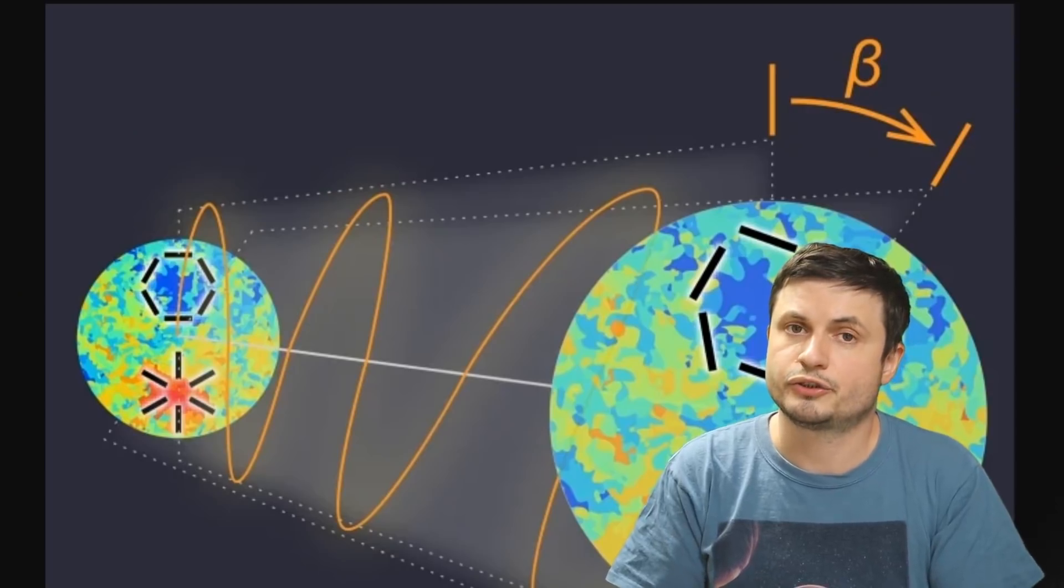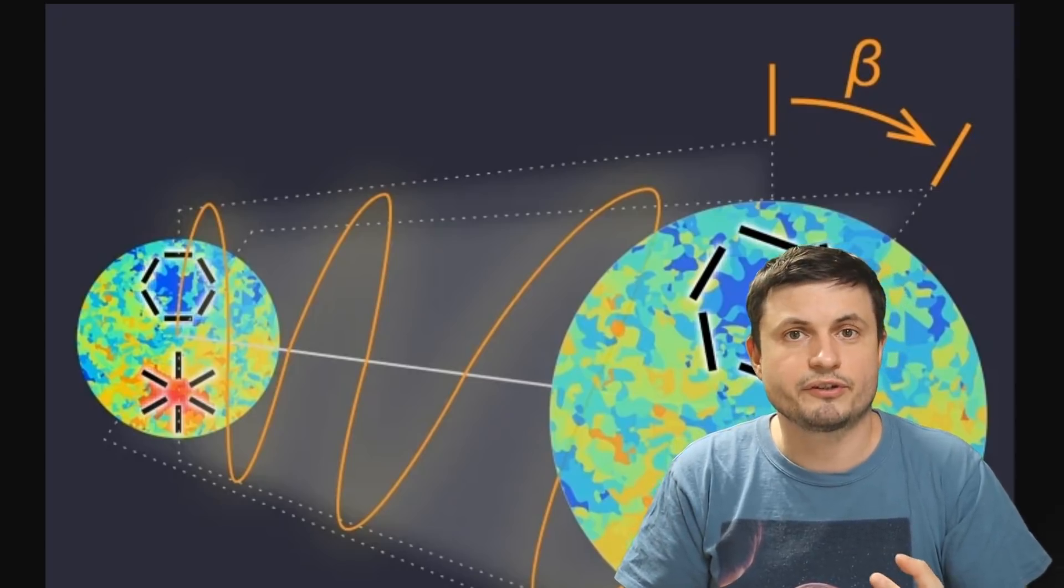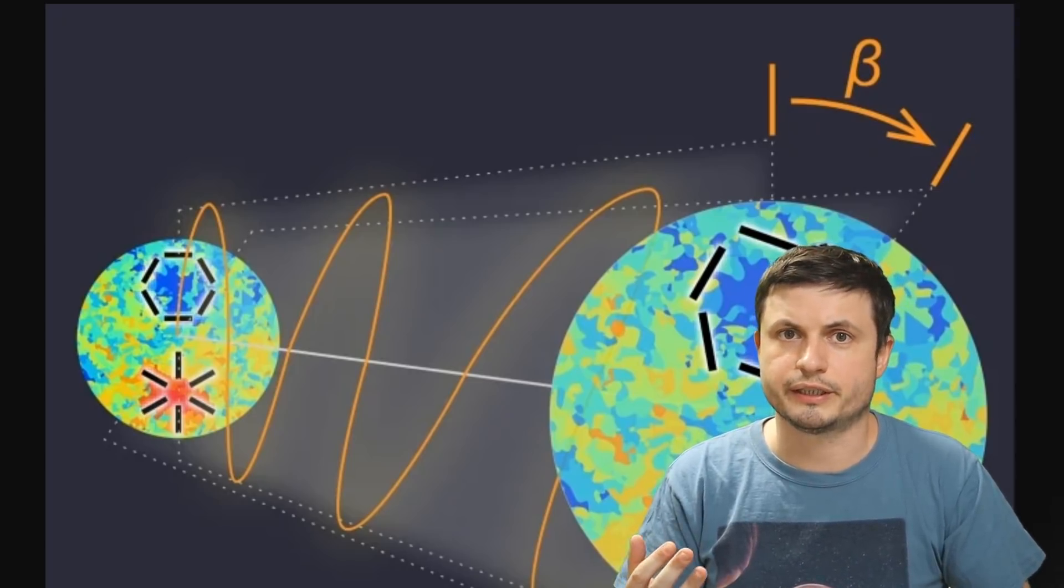So unfortunately, this study hasn't really met the confidence level yet, but it did discover something very interesting and very unusual. Something that suggests universe itself might not be P-symmetrical. It might have a preference for one side over the other side.